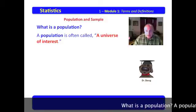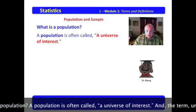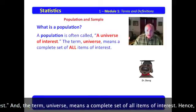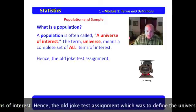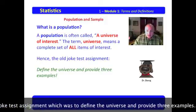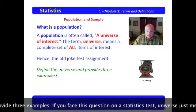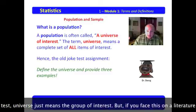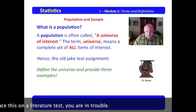What is a population? A population is often called a universe of interest. And the term universe means a complete set of all items of interest. Now hence the old joke test assignment, which was to define the universe and provide three examples. If you face this question on a statistics test, universe just means the group of interest. But if you face this on a literature test, you're in trouble.